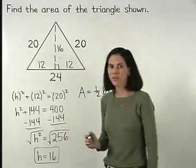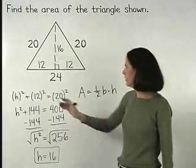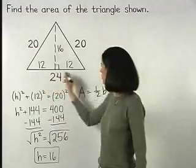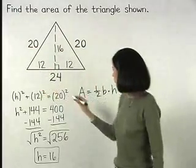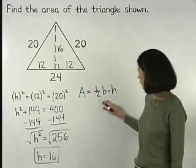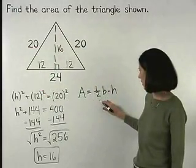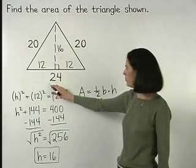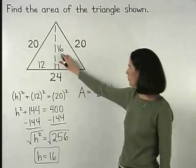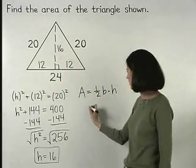So the area of the original triangle, which is one-half base times height, is one-half times 24 times 16.